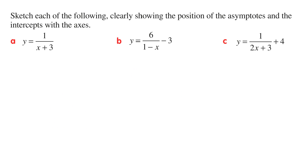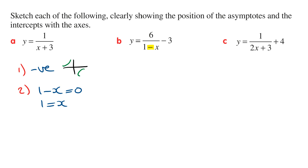Part B: y equals 6 on 1 minus x, minus 3. For the first step, we want to determine whether this is positive or negative. Since we've got the negative here, this is going to be a negative hyperbola, so the graph will lie in the second quadrant and the fourth quadrant. For the vertical asymptote, we let the denominator equal 0 and solve for x. Moving x to the right-hand side gives 1 is equal to x, so x is equal to 1, and the vertical asymptote is the line x is equal to 1. The horizontal asymptote is just the constant, which is minus 3, so the horizontal asymptote is the line y is equal to minus 3.